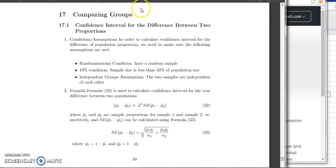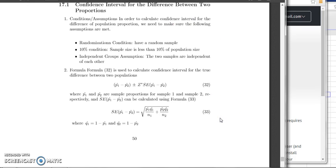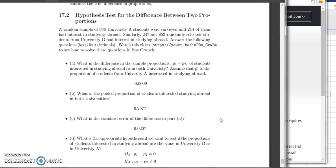So let's look at an example. So let's look at some data here. Suppose we have two samples: a random sample of 936 University A students, and we found 214 of them had interest in studying abroad. And then we took a random sample from University B, the sample size 853, and we found that 247 had interest in studying abroad.